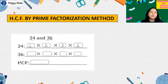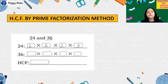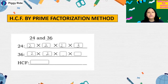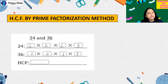You can write the prime factors in any order — it will not affect the answer. So 2 into 2 into 2 into 3 is the prime factorization of 24. Now for 36: 2 into 2 is 4, 4 into 3 is 12, 12 into 3 is 36. So the prime factorization of 36 is 2 into 2 into 3 into 3.